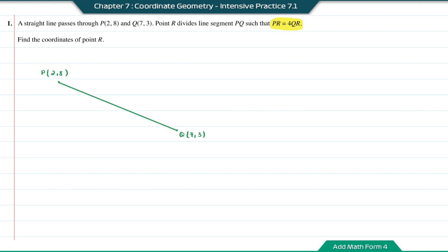From the ratio given, move QR to the left-hand side. So PR over QR is equal to 4, and we can write this as 4 over 1. So the ratio of PR is equal to 4 and the ratio of QR is equal to 1.